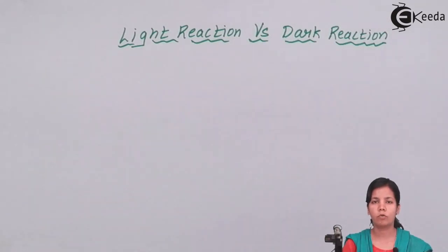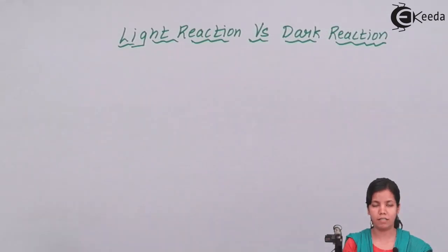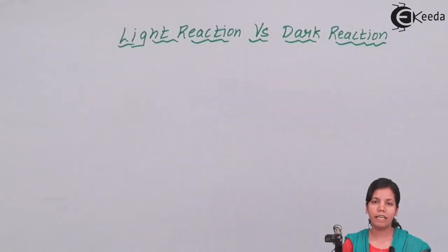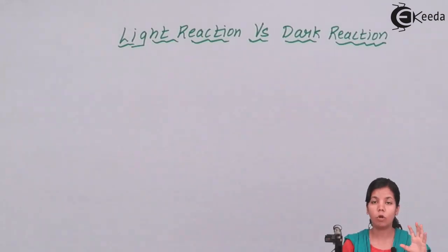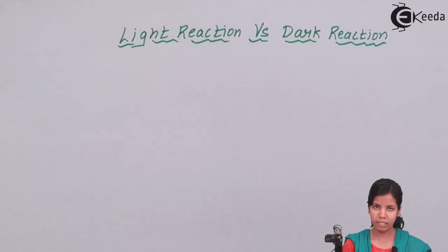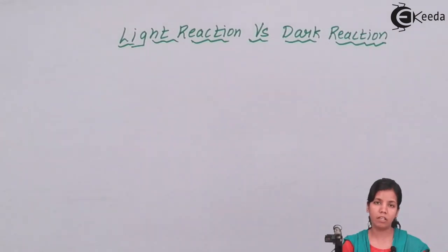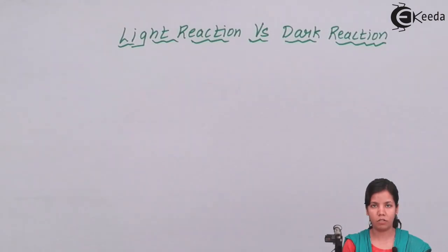Dark reaction of photosynthesis starts after sunset. During light reaction, ATP and NADP are formed — these are the energy molecules. This ATP and NADP, formed during the light reaction, is used during the dark reaction.